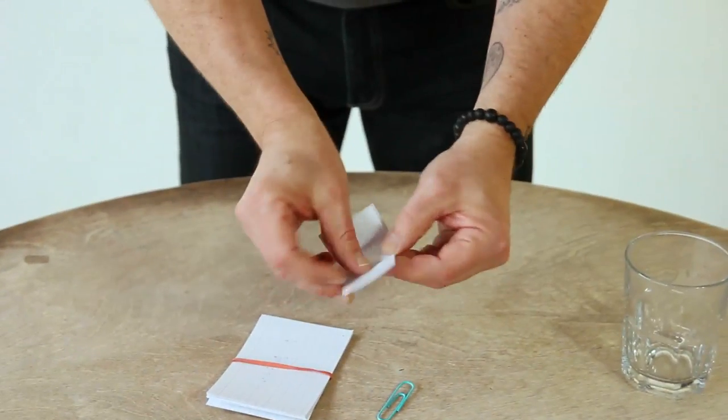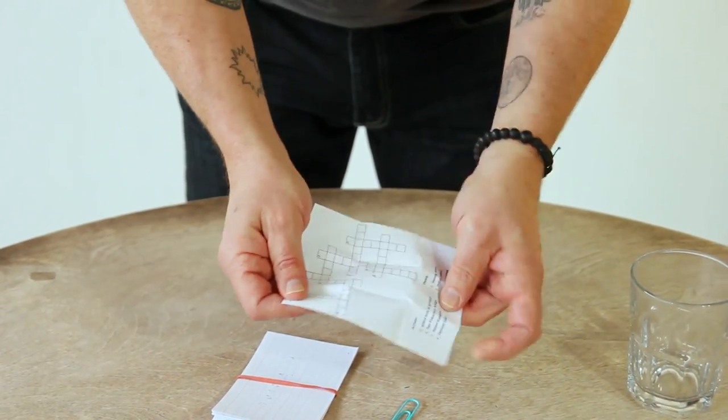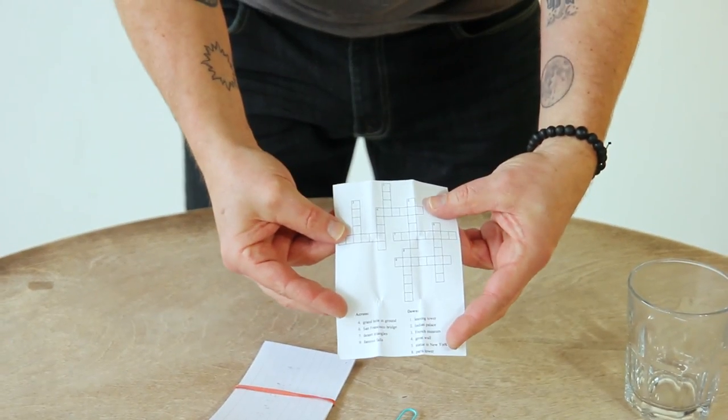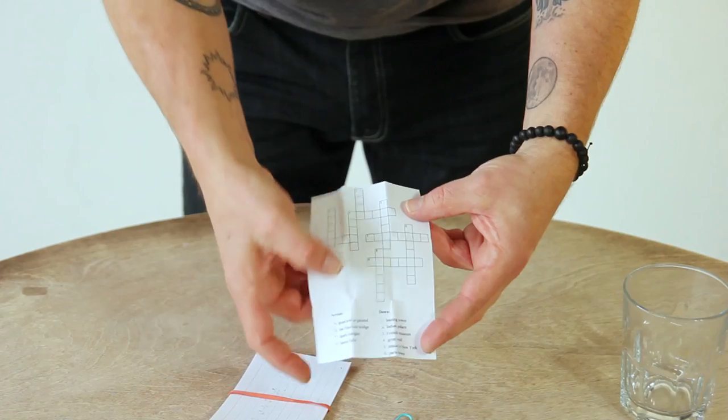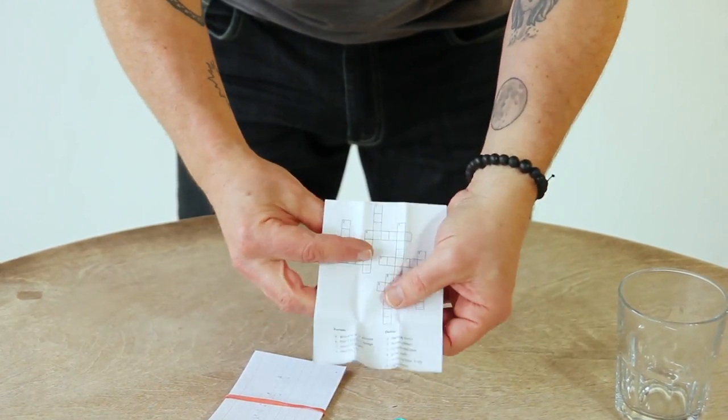This is actually a folded crossword puzzle. Now it's a simple one, about famous locations around the world and as you can see I haven't started it yet here. But look, here's what I'm going to do.